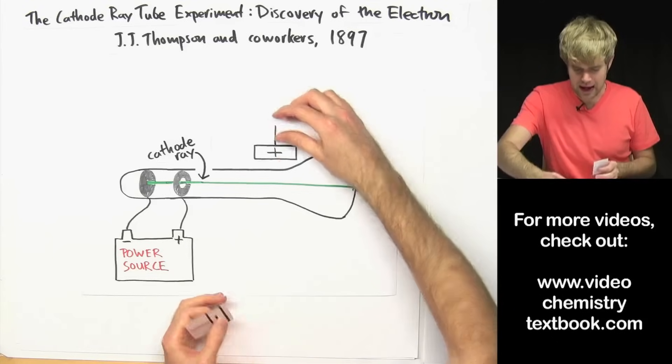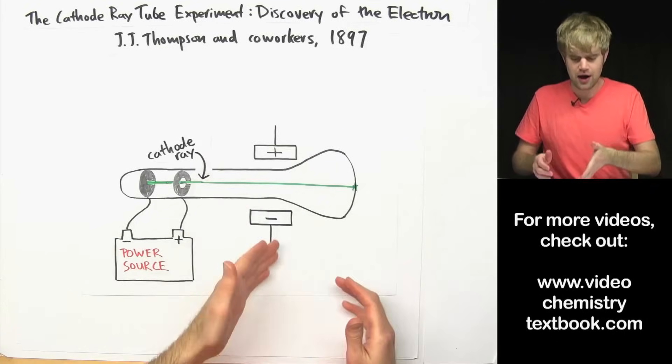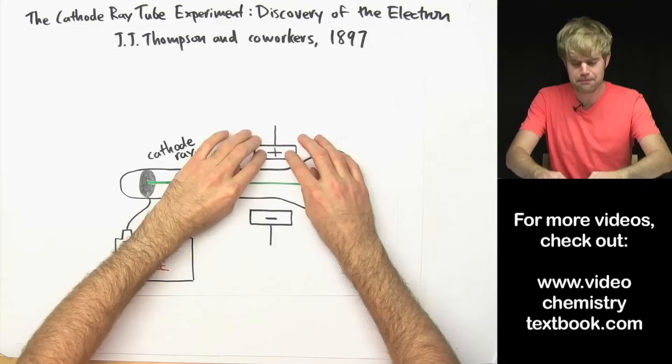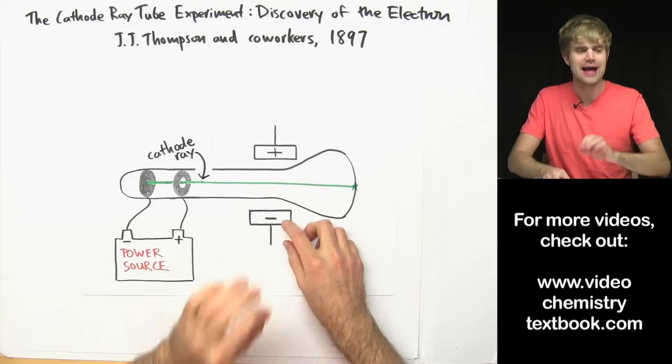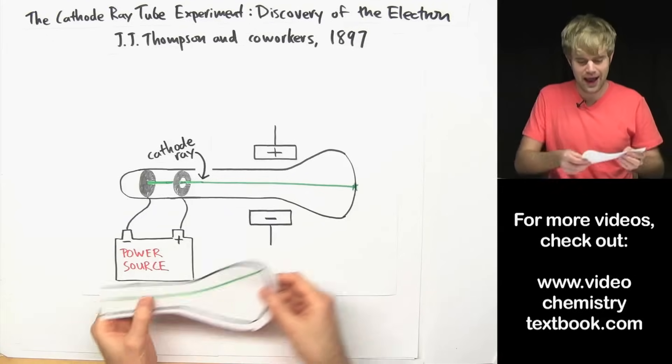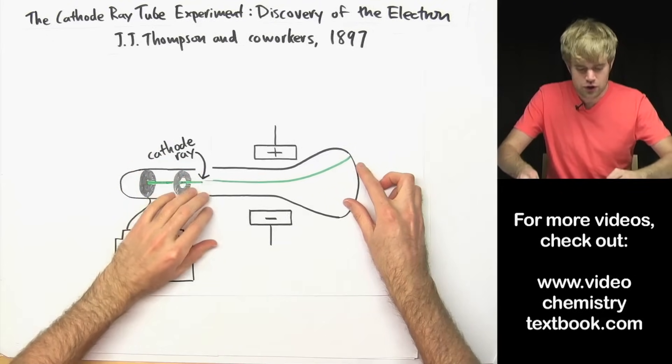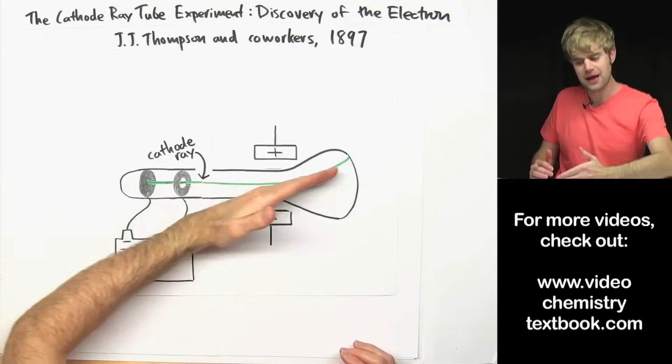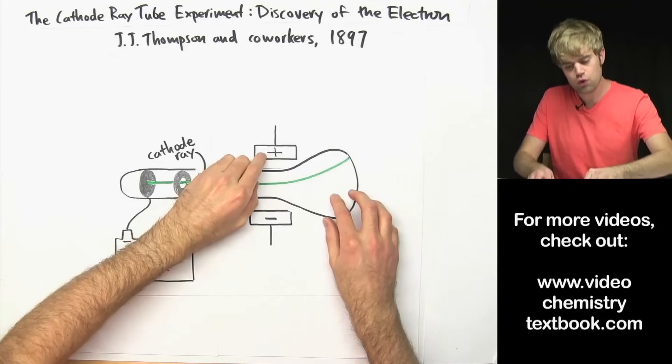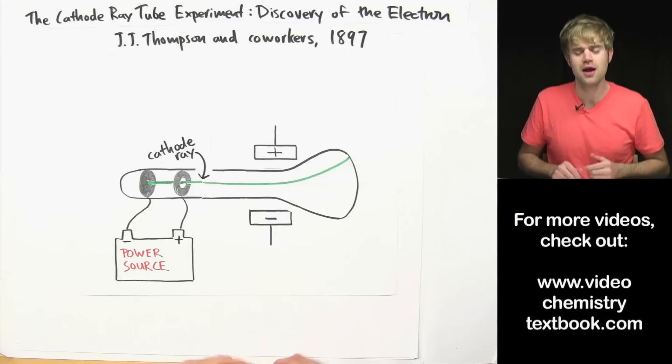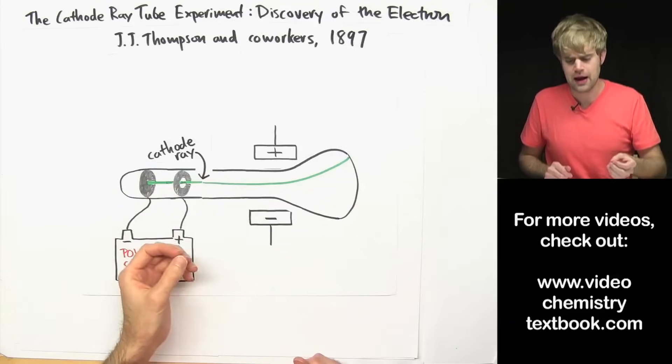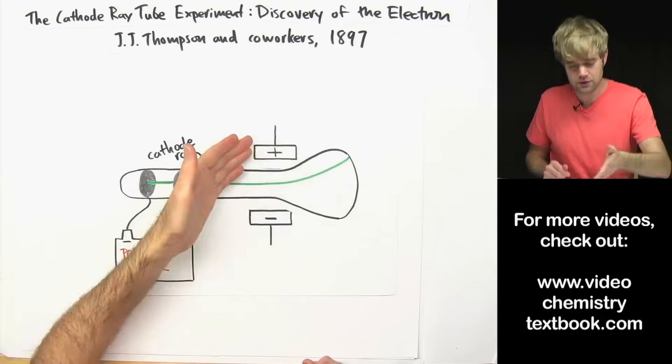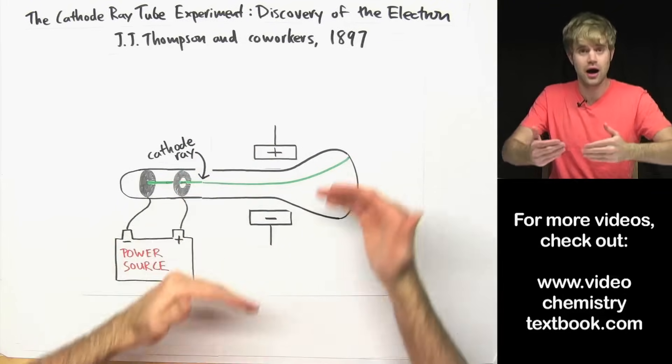He takes two metal plates and puts them on either side of the cathode ray tube. And then he turns on electricity which makes the top plate positively charged and the bottom plate negatively charged. And check out what happens to the cathode ray. When he turns on the power, he sees it now instead of going straight through, the cathode ray bends up. It bends up towards the positively charged plate. So based on this, he reasons that the cathode ray must be made of stuff that's negatively charged since it's attracted to the positively charged piece of metal and he knows that opposite charges attract.